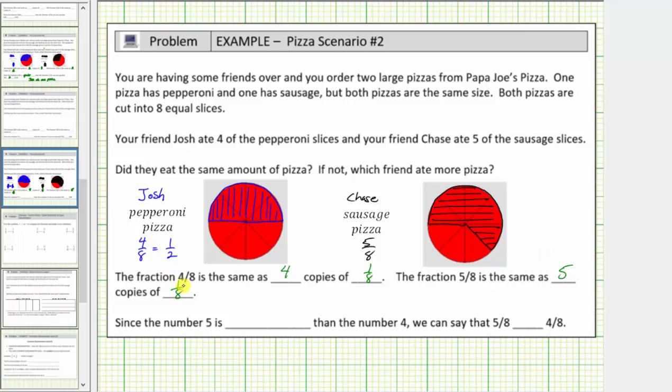Going back to the pizzas, we know Josh ate four pieces, where each piece is the size of one-eighth of the pizza. And Chase ate five-eighths of the pizza, which means he ate five pieces, where each piece is the size of one-eighth of the pizza.